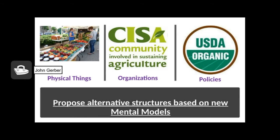Remembering the iceberg model, we know that structures are represented by physical things, such as farmers markets, organizations such as advocacy groups like CISA, and policies like USDA organic rules. All these are alternative structures based on a different kind of a mental model than the commodity system.